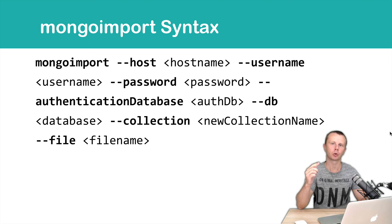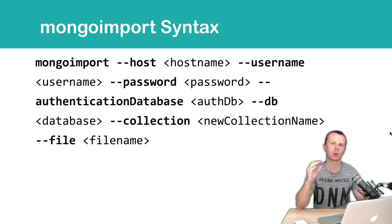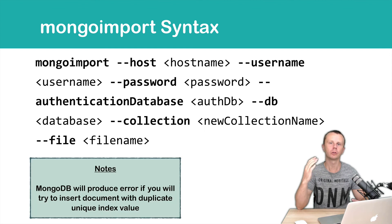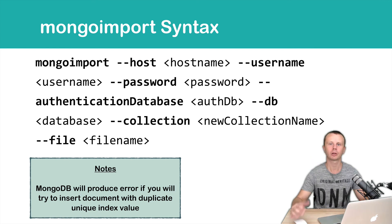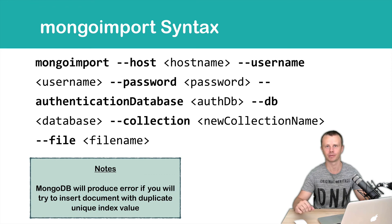Please note that if you try to insert documents into a collection where documents already exist and you add documents with a duplicate index value, MongoDB will produce an error. By default, there is one unique index field, and it is of course _id. Let's go on and try the mongoimport utility in action. See you shortly.